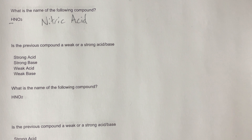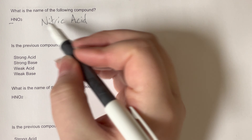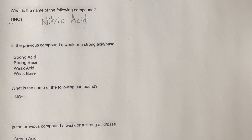Is the previous compound a weak or strong acid or base? The previous compound was nitric acid. My strong acids are hydrogen bonded with nitrate, sulfate, all halogens excluding fluorine, and all chlorine polyatomics. Nitrate is one of those, and so therefore it will be a strong acid.